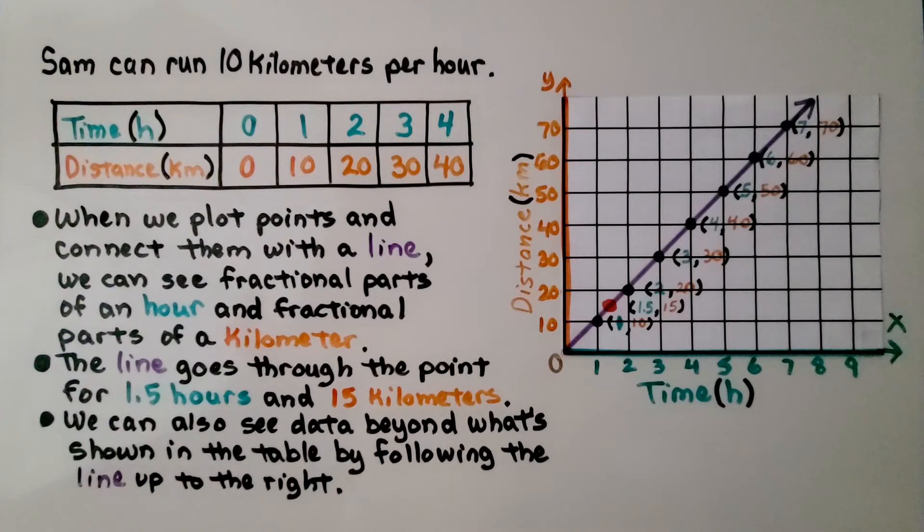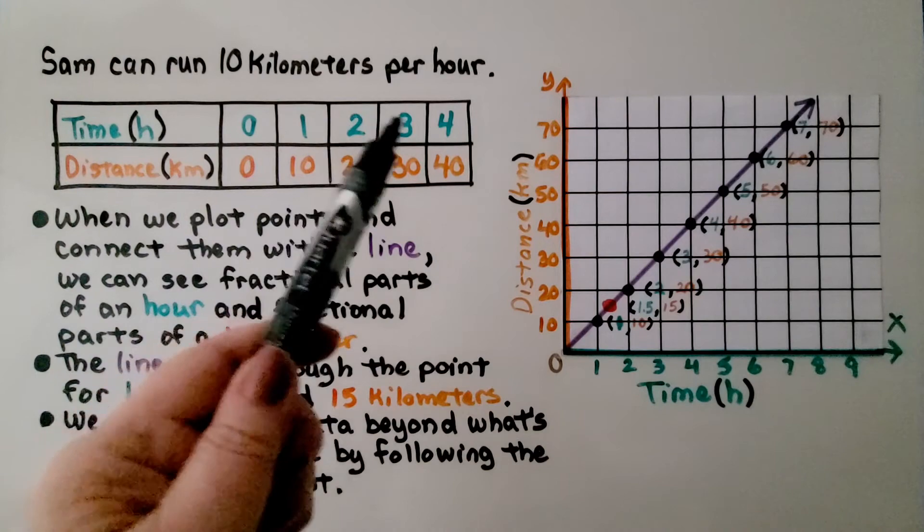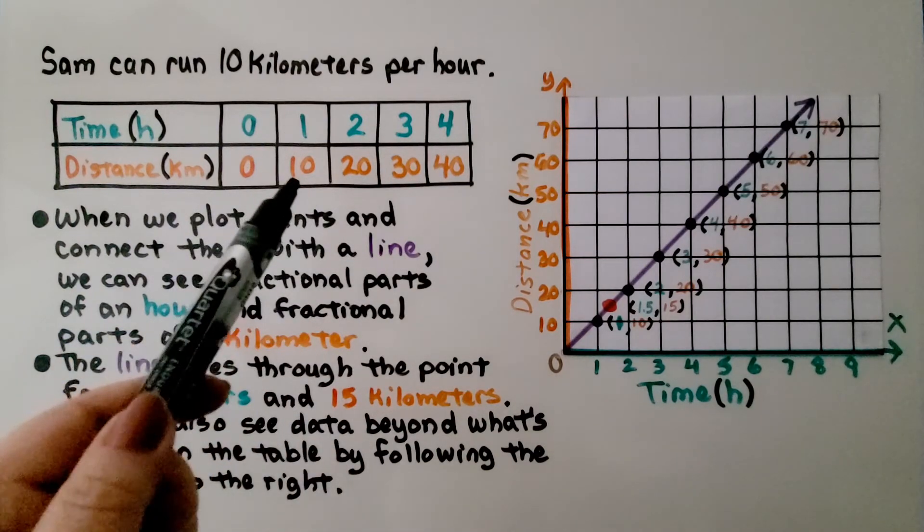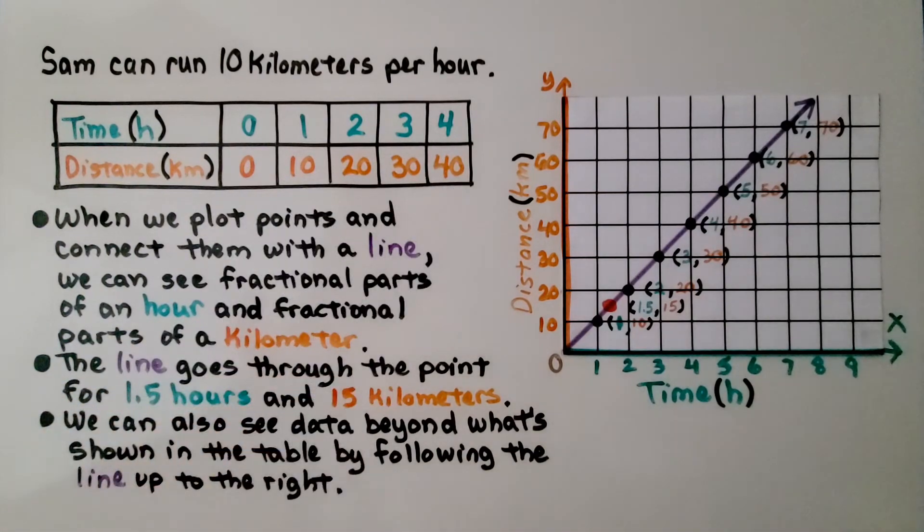Sam can run 10 kilometers per hour. Because it's 10 per hour, we know in one hour he runs 10. We can complete the rest of his table.